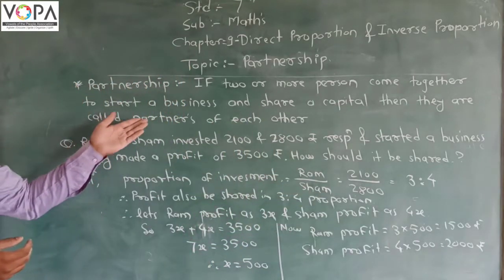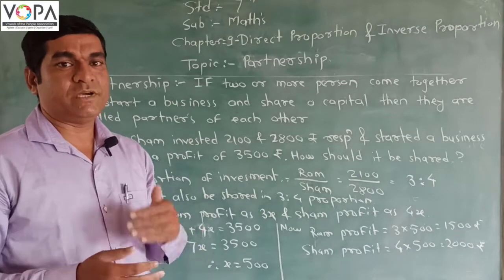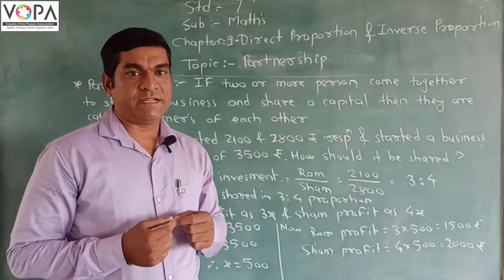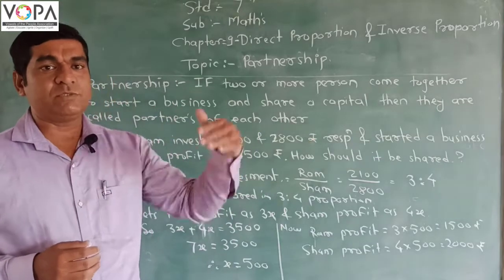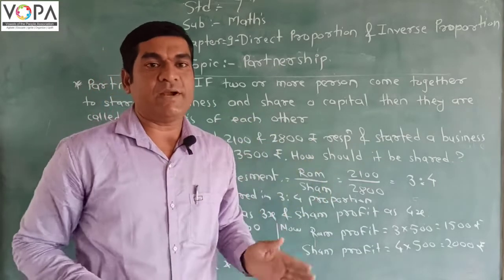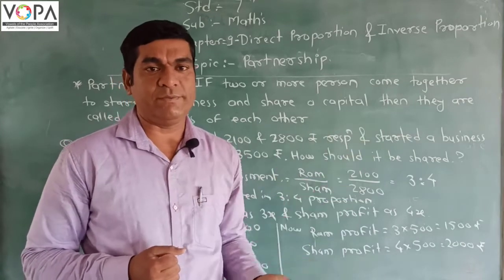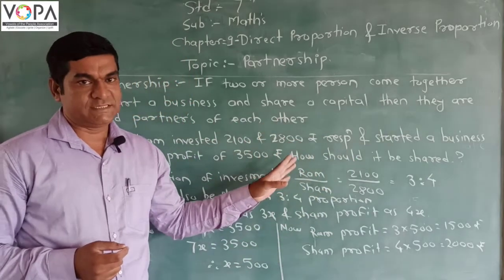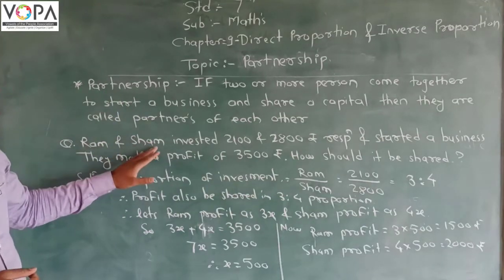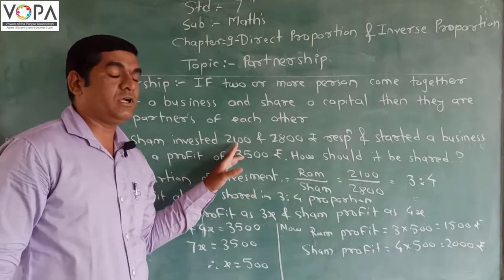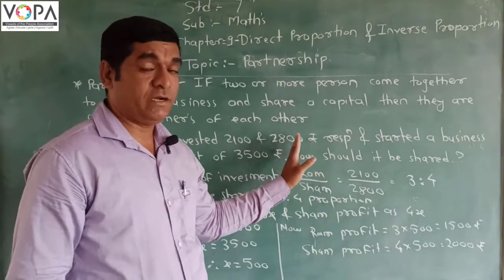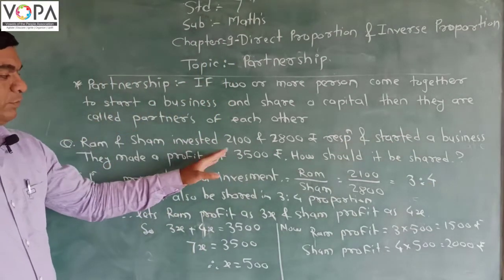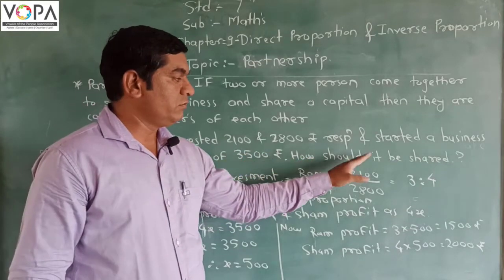Now in this partnership, if we start a business and afterwards get a profit, how should we share it? Because 30 rupees came from my side and 70 rupees from my friend, so it is not an equal partnership. Let's look at an example: Ram and Shah invest 2,100 and 2,800 rupees respectively and start a business, then make a profit of 3,500 rupees. How should we share?